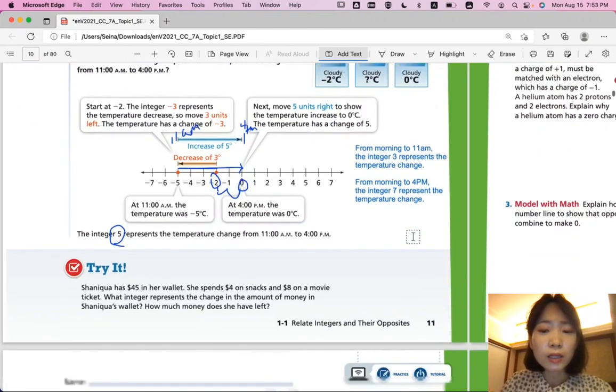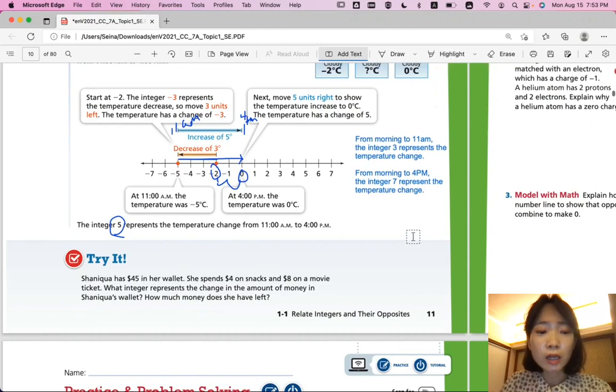Let's look at the try it question. Shanika has $45 in her wallet. She spends $4 on snacks and $8 on a movie ticket. What integer represents the change in the amount of money in Shanika's wallet? How much money does she have left? So let's represent the change as an integer here. So if you can solve this by yourself and come back when you're ready for answers.